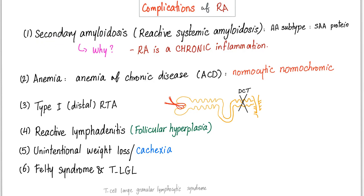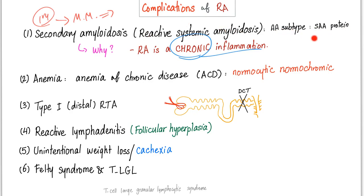Secondary amyloidosis — why? Because rheumatoid is a chronic inflammation, and as you remember from pathology, secondary amyloidosis follows chronic inflammation. Secondary amyloidosis, also known as reactive systemic amyloidosis because it's reactive to the chronic inflammation, involves the AA subtype and SAA protein.